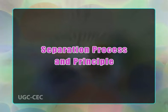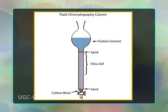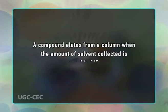Separation process and principle: Different compounds in the sample mixture travel at different rates due to differences in their attraction to the stationary phase and differences in solubility in the solvent. By changing the solvent or using a mixture, the separation of compounds measured by the RF value can be adjusted. The separation achieved with a TLC plate can also be used to estimate the separation of a flash chromatography column — a compound elutes from a column when the amount of solvent collected is equal to 1/RF. Chemists often use TLC to develop a protocol for separation and to determine which fraction contains the desired compounds.